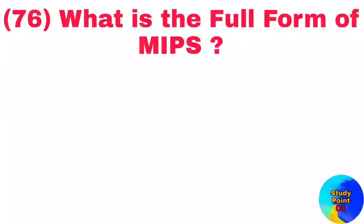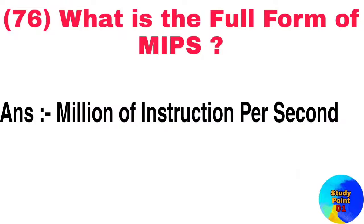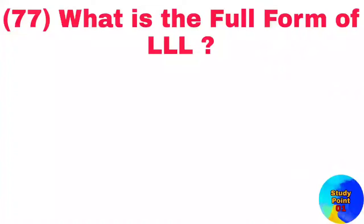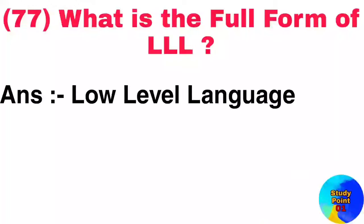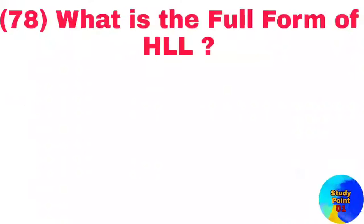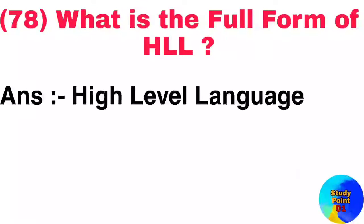Question number 76: What is the full form of MIPS? Answer: Million of instructions per second. Question number 77: What is the full form of LLL? Answer: Low level language. Question number 78: What is the full form of HLL? Answer: High level language.